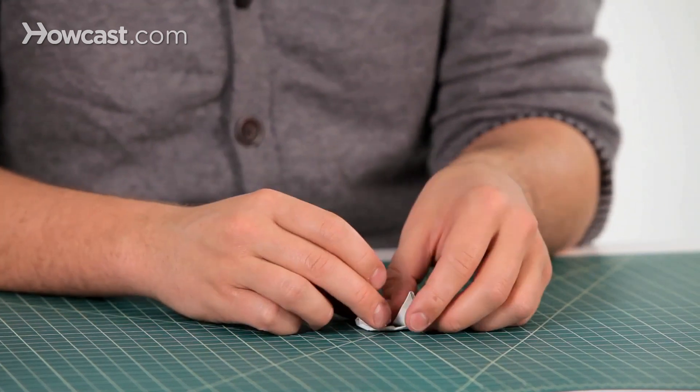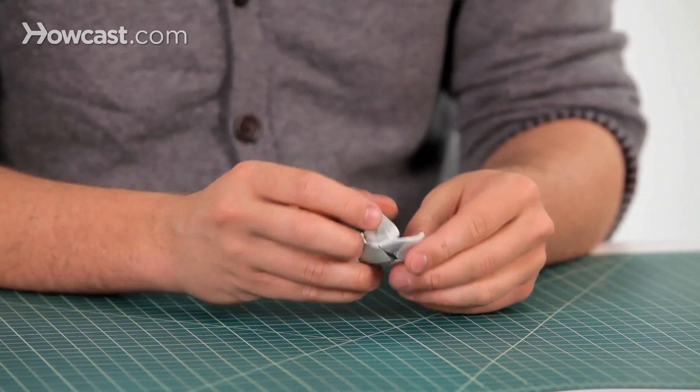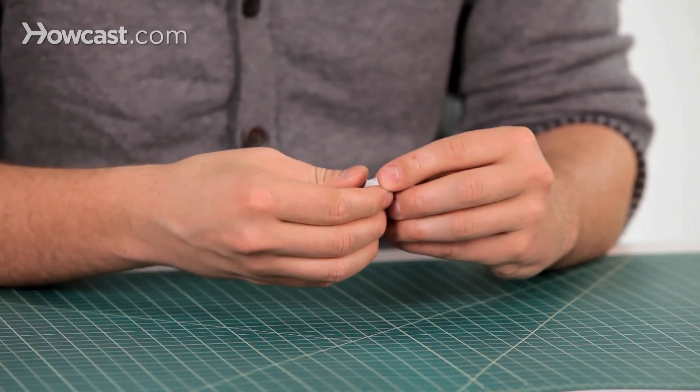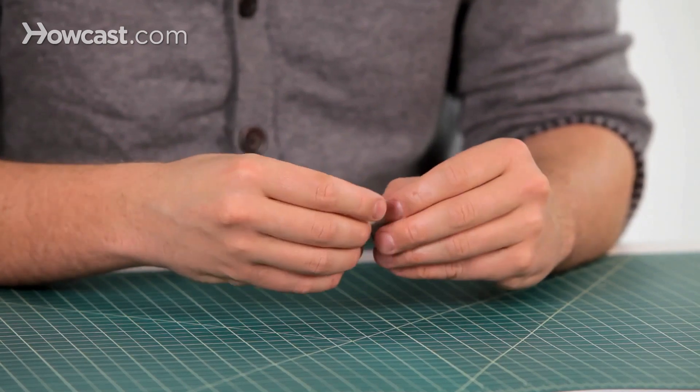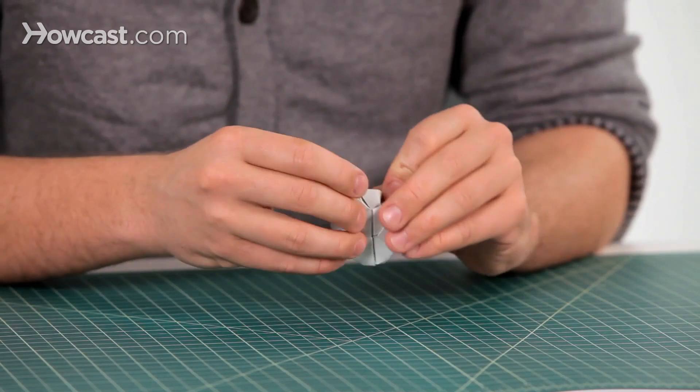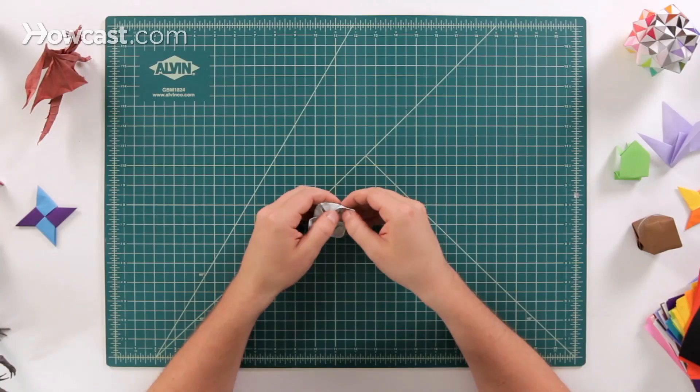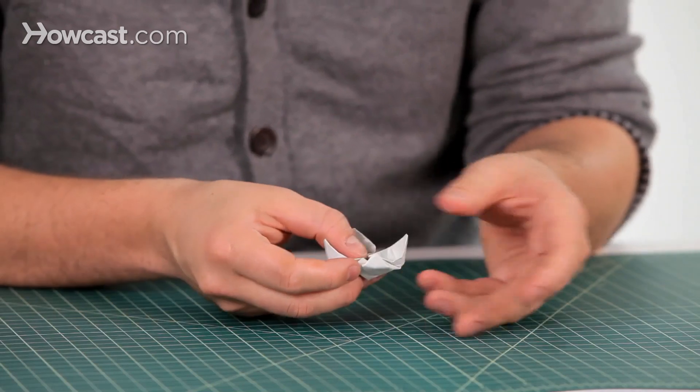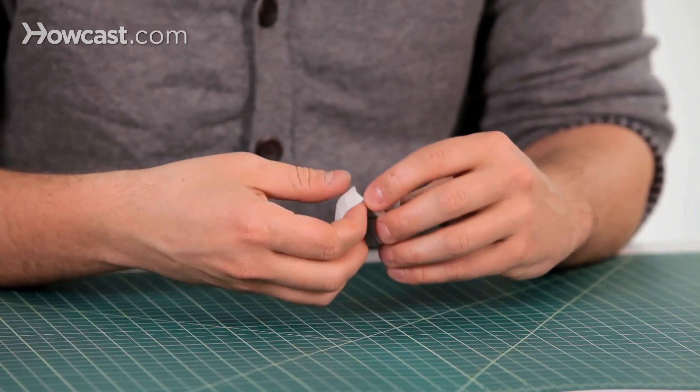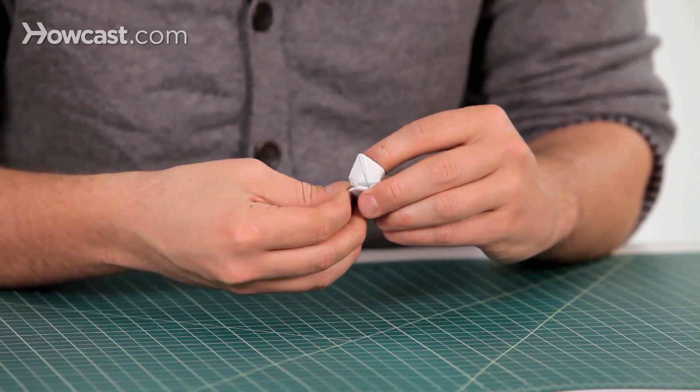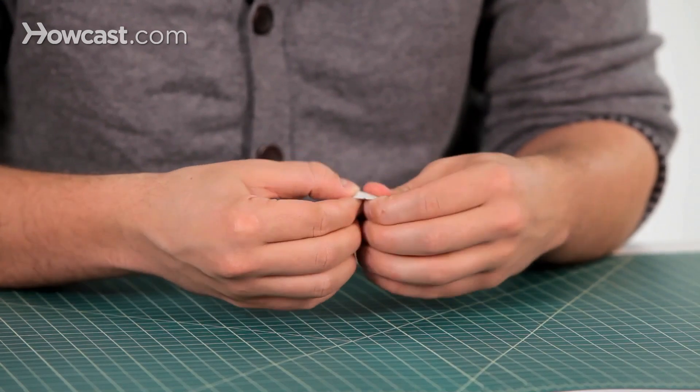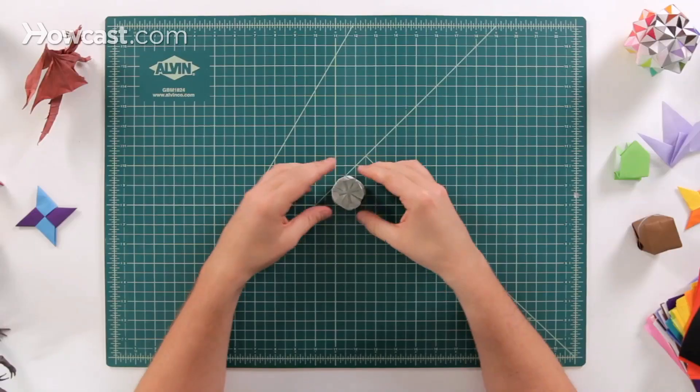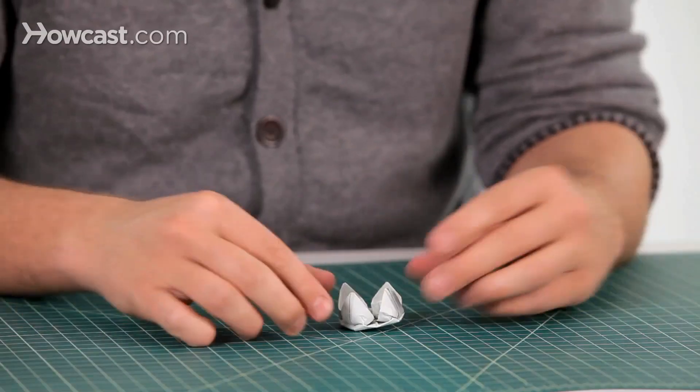So we're going to do that eight times all the way around the model. Just like this. Pick it up. Push it through. Wrap it around. Sometimes it's too hard to try and unfold some of the paper so you sort of have to get this all to flip inside out as carefully as you can. So those are the four to start off with.